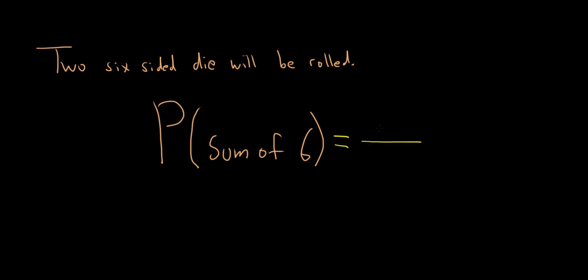In the numerator, it's the number of ways to get a sum of six. In the denominator, it's the total number of possibilities. Let's figure out the denominator first.